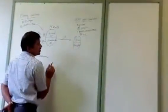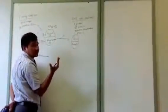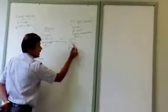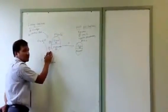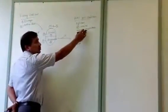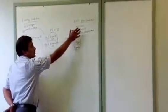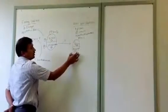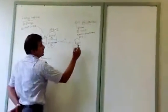When PFK2 kinase has no phosphate — meaning it is in the dephosphorylated state — it becomes active. The phosphatase, which is active in the phosphorylated state, has now had its phosphate removed by protein phosphatase, so it becomes inactive. So in the presence of insulin, PFK2 kinase is active and phosphatase is inactive.